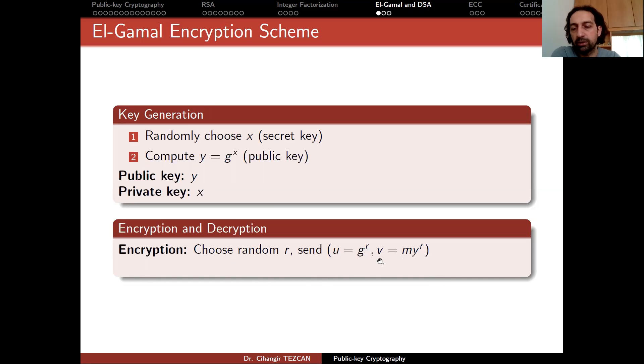When the attacker who listens to the communication would capture U and V. But since the discrete logarithm problem is hard, they won't be able to capture R from here, or M from here.